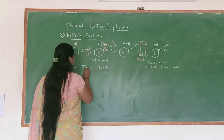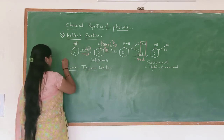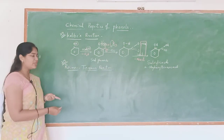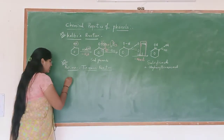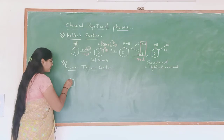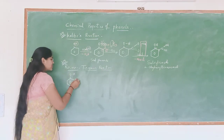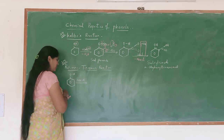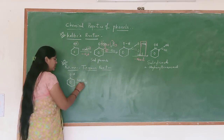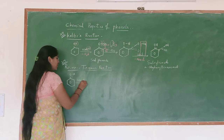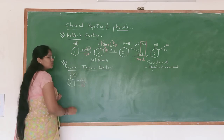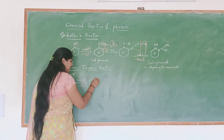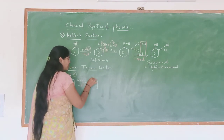Even this is important for exams. In the Reimer-Tiemann reaction, initially phenol reacts with sodium hydroxide NaOH. As we know, when NaOH reacts with phenol, it eliminates H2O — the H of NaOH and OH of phenol together create H2O — giving the most reactive compound, that is sodium phenoxide.